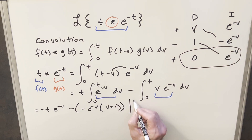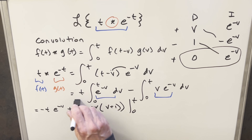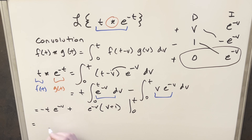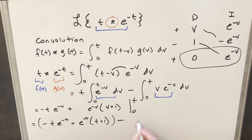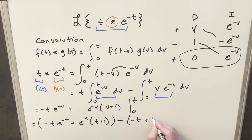Now we evaluate the whole thing from 0 to t. Minus times minus is plus, so we can simplify. Evaluating first at t, we get minus t times e to the minus t, plus e to the minus t times t plus 1. Then subtracting the evaluation at 0: e to the 0 is 1, giving minus t; e to the 0 is 1 again; and plugging in 0 gives 0 plus 1, which is just 1.